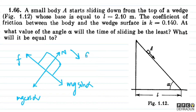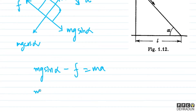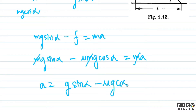Applying Newton's second law along the incline: Mg sin alpha minus friction equals M times acceleration. The friction force F equals mu times N, and N equals Mg cos alpha, so friction equals mu times Mg cos alpha. The mass M cancels out, giving acceleration a = g sin alpha minus mu g cos alpha.